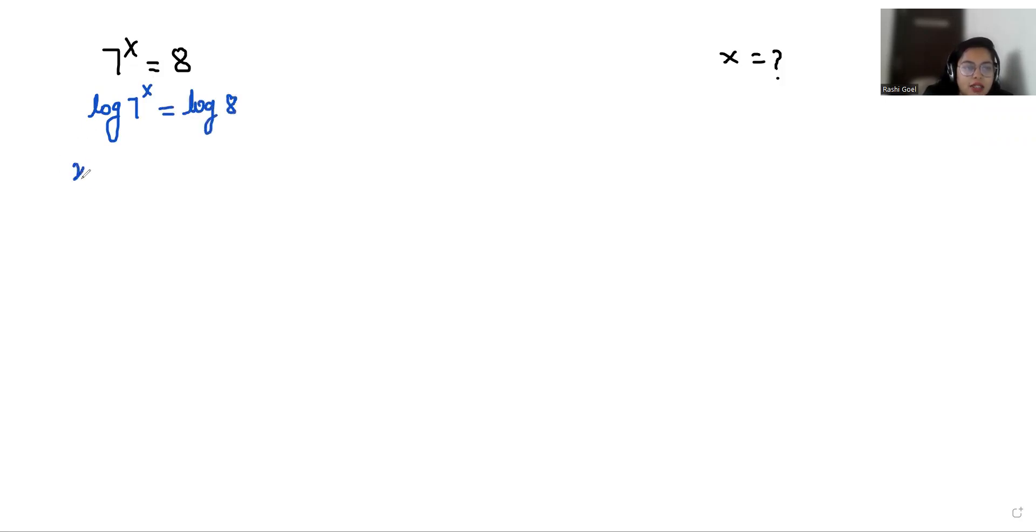We can write this as x log 7 is equals to log 8. Now I'm going to divide with log 7 both sides. We can cancel out this. So x is equals to log 8 by log 7.